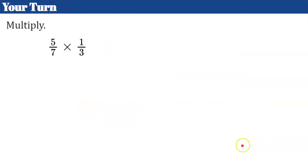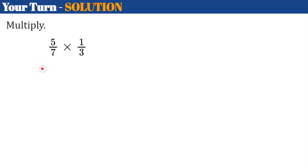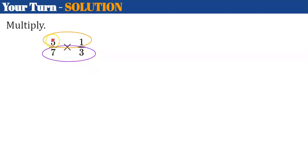Now it's your turn. Find the product — remember, product is the answer when you multiply. Make sure your answer is in simplest form. Come back when you're ready to check your work. Let's check your solution. Looking at the numerators and denominators, there are no common factors, so we just multiply. Five times 1 is 5, seven times 3 is 21, and it's in simplest form: five twenty-firsts.